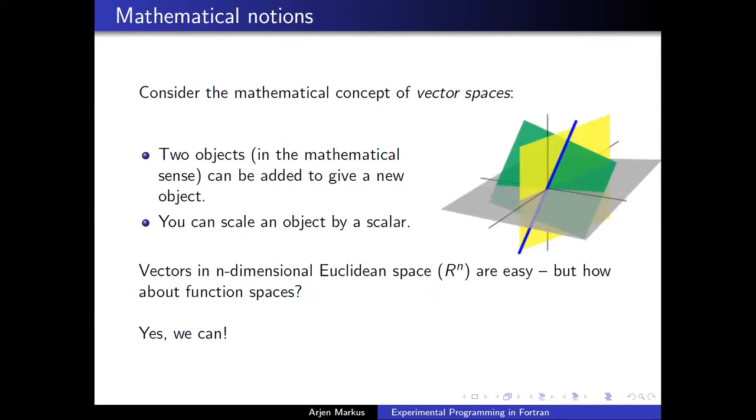So here's the first example, vector spaces. We have all learned them, I guess, during our studies. Vector spaces have basically two properties. You have objects you can add, and you can scale an object. A typical example would be a 3D space, where you have points, and you can have lines. But you also have function spaces. And my experiment consists of using actually functions as objects in such a space, and manipulate these functions. And actually you can do that.